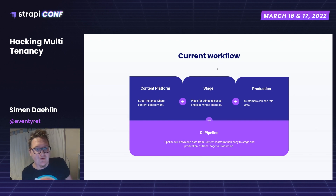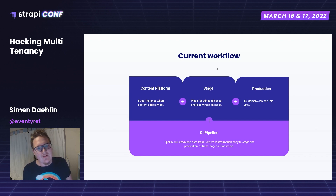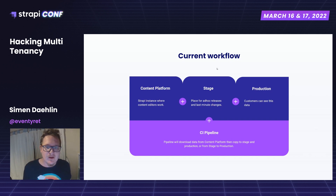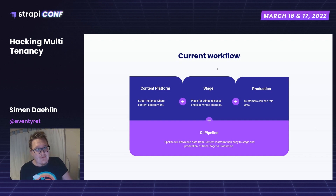An editor — let's call them an editor — does their work and hits save. This has a bunch of other stuff implemented into it, which is why it's been a problem. We have to add custom statuses and check them, and then copy and duplicate data over. This goes to stage, where ad hoc releases and last-minute changes are handled. And then it goes straight to production. This pipeline looks up the API on the content platform, downloads the data, and copies it to stage and then to production.